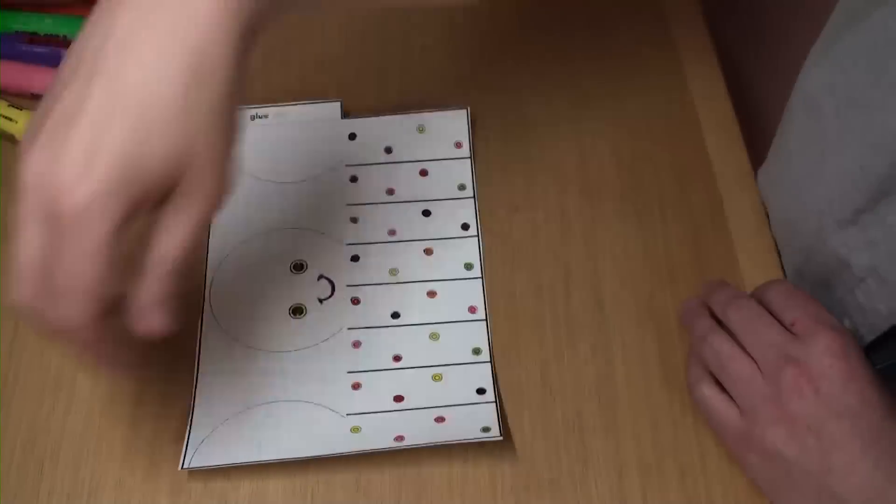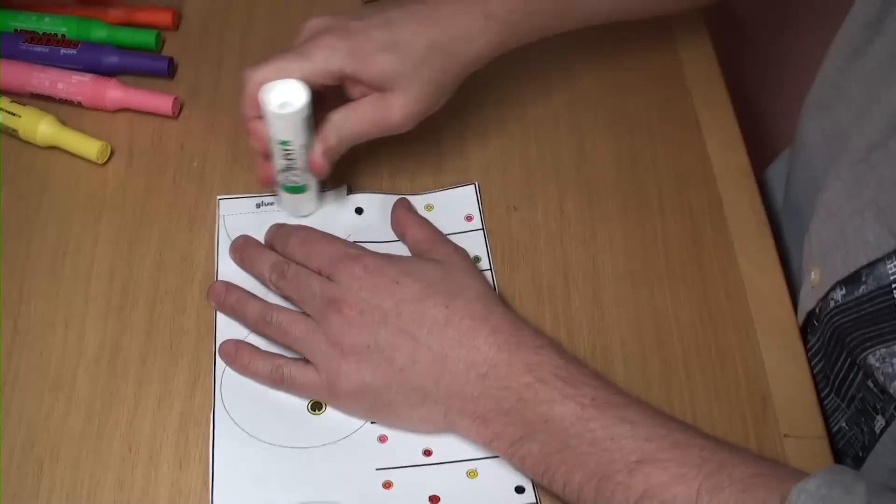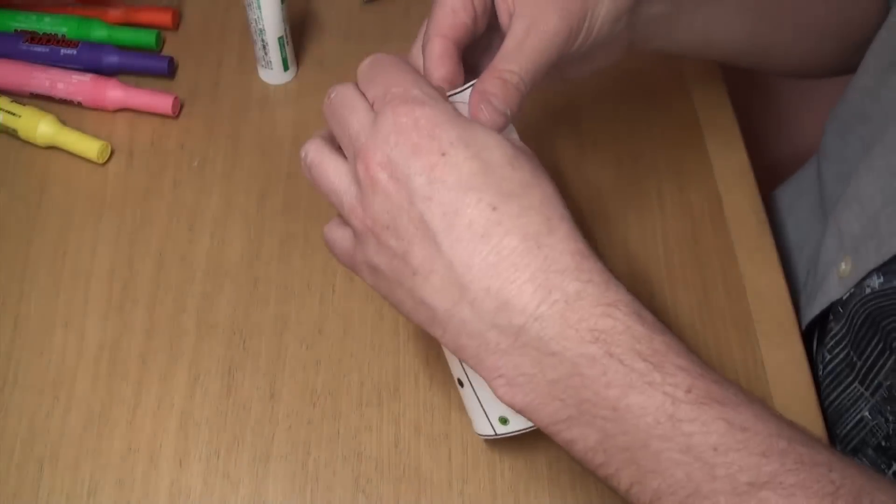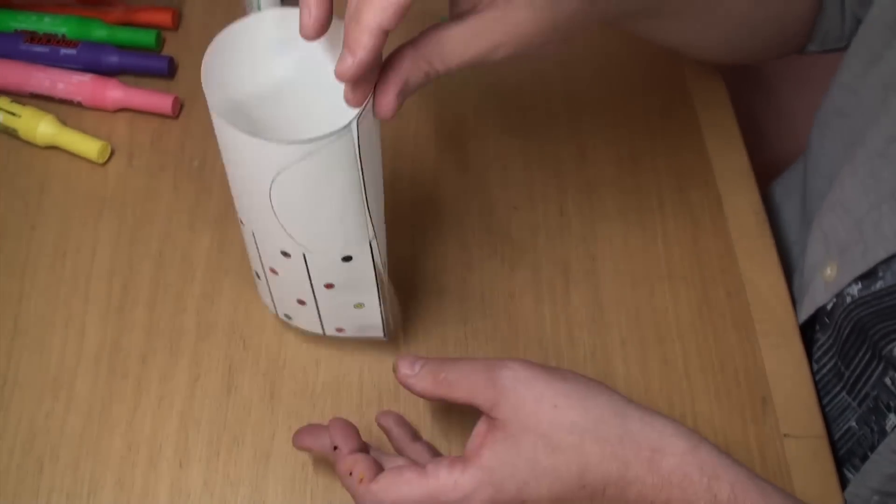Now let's put some glue on the tab. There we go. And roll it up, stick it together, and leave it for a minute to dry.